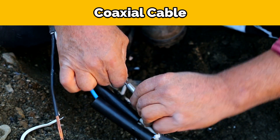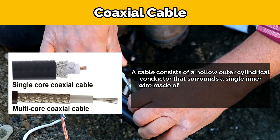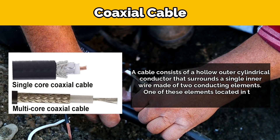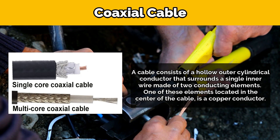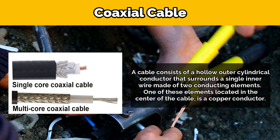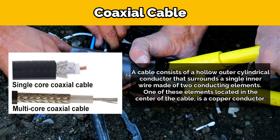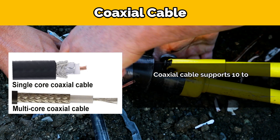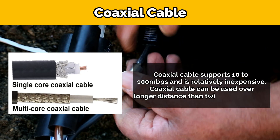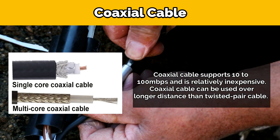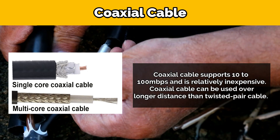Coaxial cable consists of a hollow outer cylindrical conductor that surrounds a single inner wire made of two conducting elements. One of these elements is located in the center of the cable and is a copper conductor. Coaxial cable supports 10 to 100 Mbps, is relatively inexpensive, and can be used over longer distances than twisted pair cable.